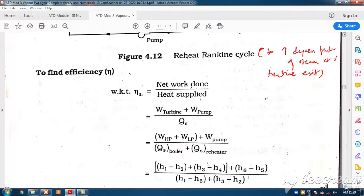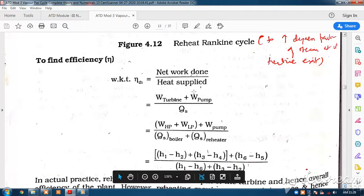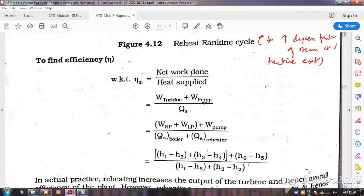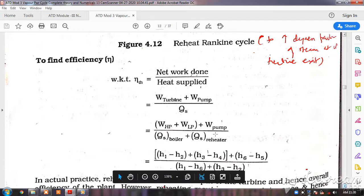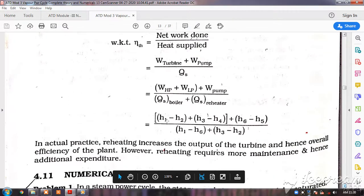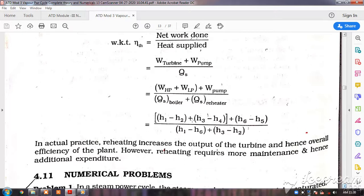As per the usual notation, thermal efficiency equals work done divided by heat supplied. Here the work done is turbine work plus pump work divided by heat supplied. This is high pressure turbine plus low pressure turbine plus pump work, divided by boiler plus reheater heat input. That is (H1-H2) plus (H3-H4) plus (H6-H5) divided by (H1-H6) plus (H3-H2).